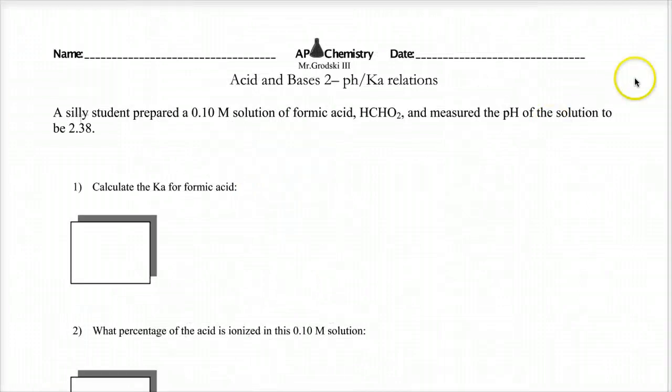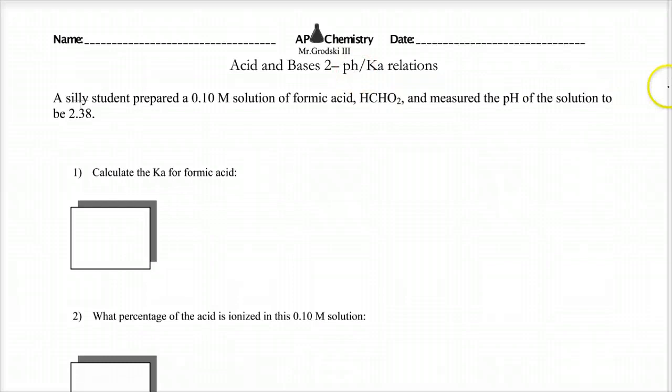So now that we're ready to rock and roll here, we're starting out evaluating acid and bases. This is acid and base 2. We have a student prepared a 0.1 molar solution of formic acid, and we want to measure the pH of the solution. Or we want to know if the pH of the solution is 2.38, we want the Ka for this acid. So this is not a strong acid. It's not one of the top sevens we talked about.